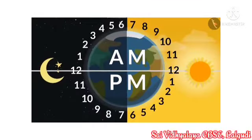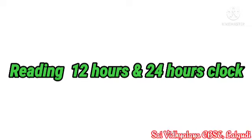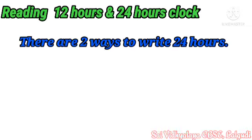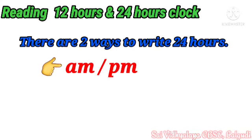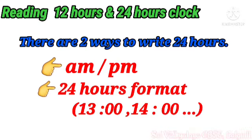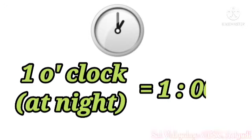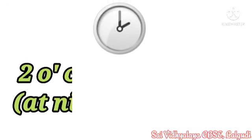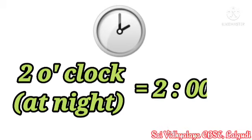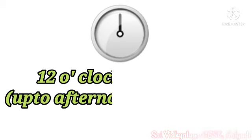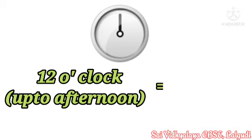Remember, in a 12-hour clock, each time comes twice in a day. Now let's look at reading the 12 and 24-hour clock. There are two ways to write 24 hours. One way is to write AM or PM along with the time. The second way is to write the time according to the 24-hour format, where we won't write AM or PM. For example, 1 o'clock at night is written as 1:00, 2 o'clock at night as 2:00, and so on till 12:00 in the afternoon.